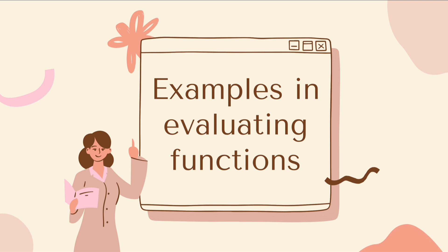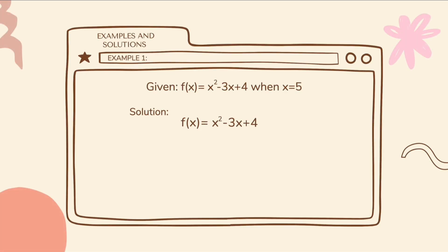Here are some examples in evaluating functions for you to better understand the topic. For example number one, we have the given f of x is equal to x squared minus 3x plus 4, when x is equal to 5.